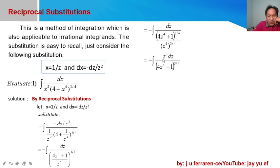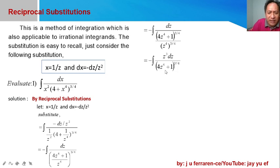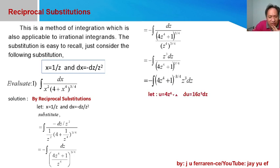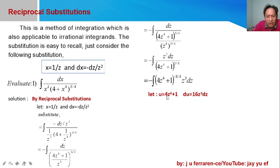Our denominator is in the fourth degree while we have a factor z³ dz, which is in the third degree. If we take u equal to the base (4z⁴ + 1) and differentiate, its differential will involve z³ dz. This suggests we can use the power rule of integration, so we rewrite with the negative three-fourths exponent. Our u is (4z⁴ + 1).